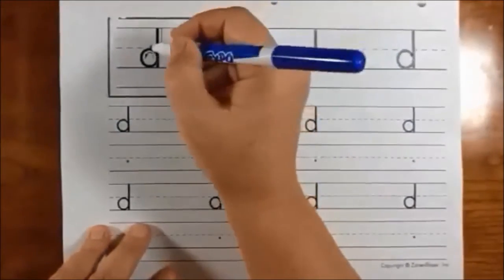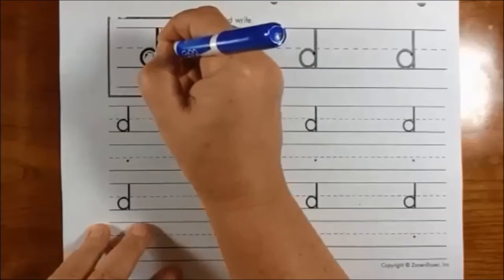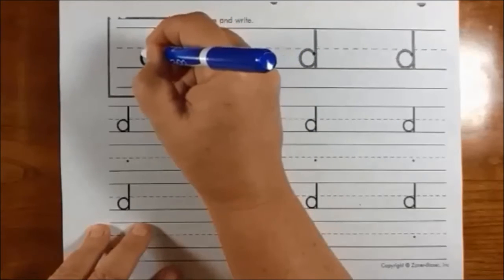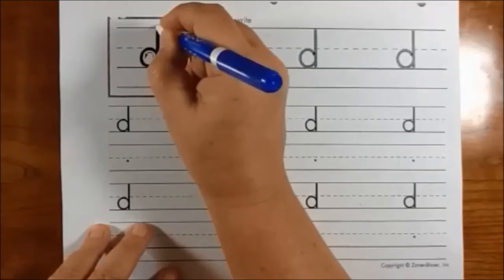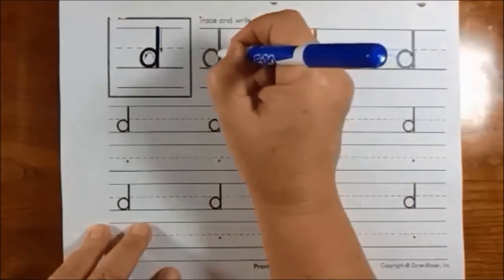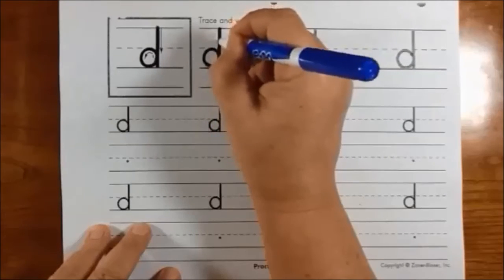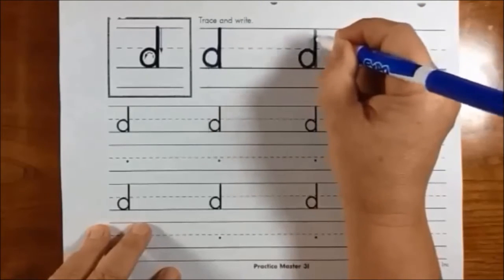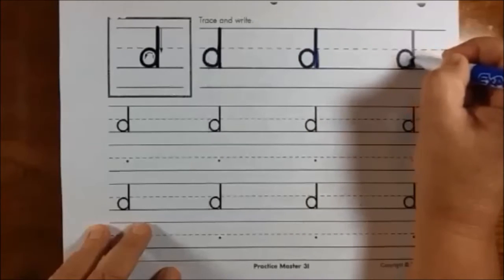Now let's learn how to make the lowercase D. Again, the lowercase D starts on this curve. It starts like the O over here at the 2 o'clock spot. So you go over, around, all the way up to the top line, and down. So it's over, around, up, down. Over, around, up, down. Over, around, up, down.